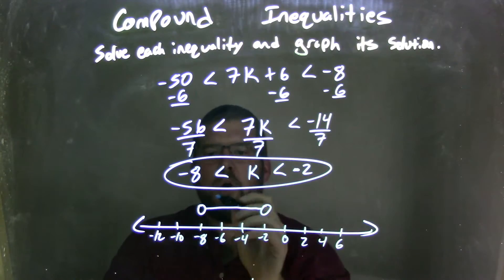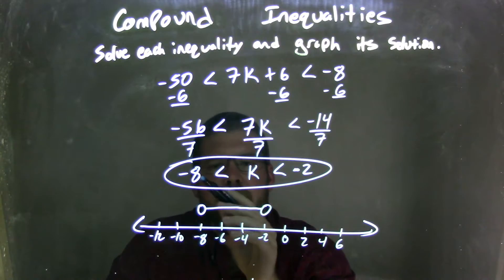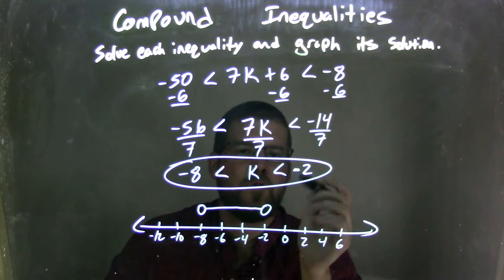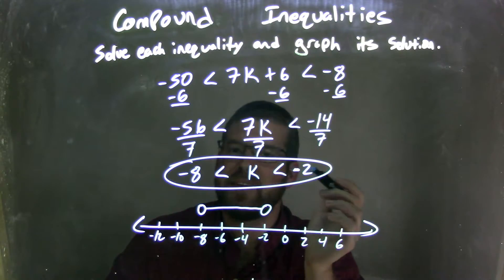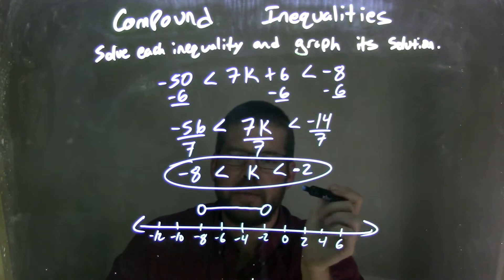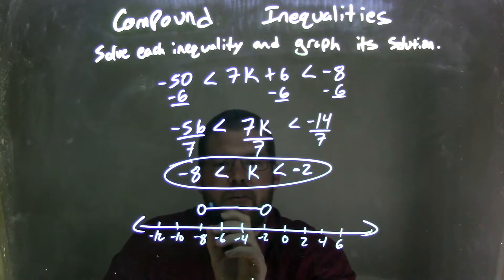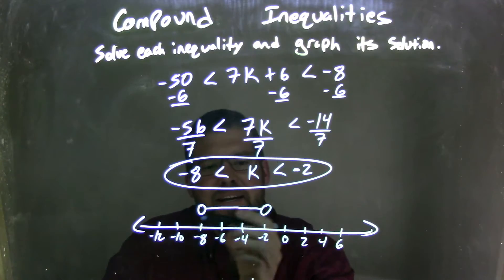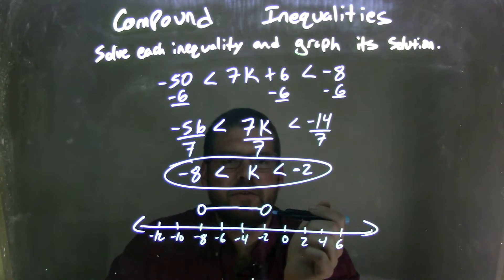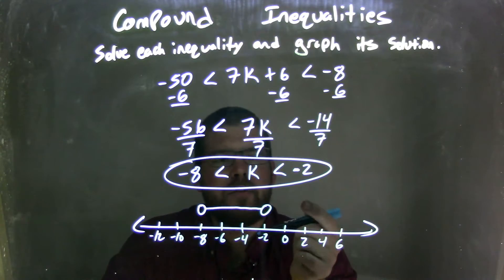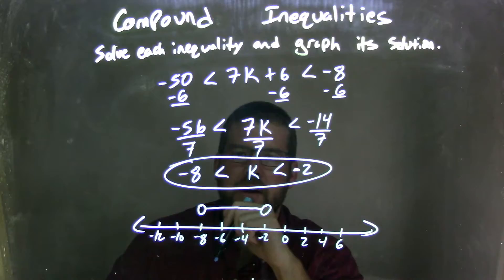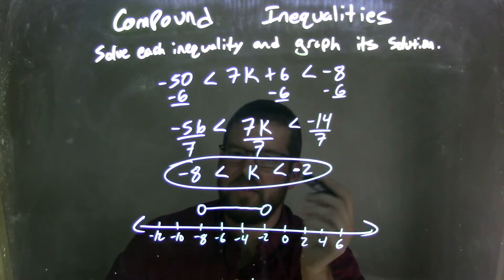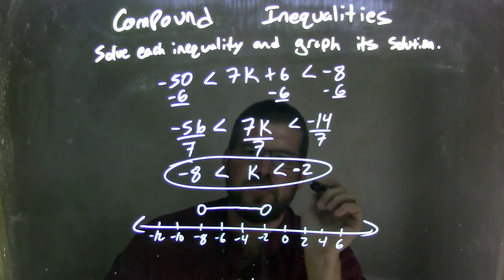So now I need to graph it. Open circle at negative 8, because k cannot equal negative 8, and open circle at negative 2, because k does not equal negative 2. So now I have my line in between, because k exists between negative 8 and negative 2. My graph here now matches my final answer, which is negative 8 is less than k, which is less than negative 2.